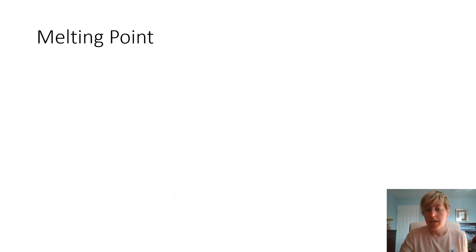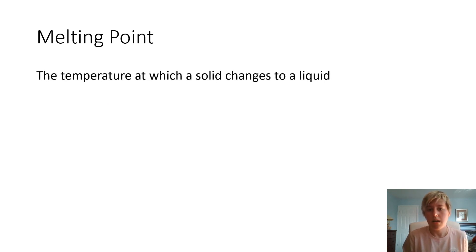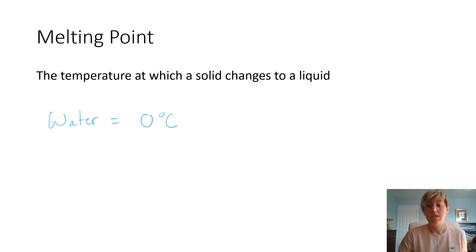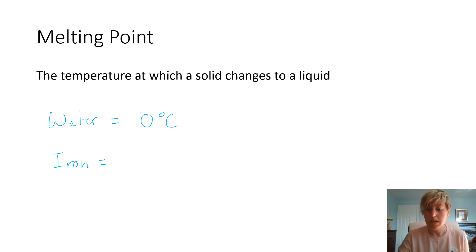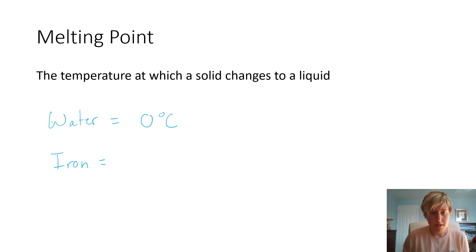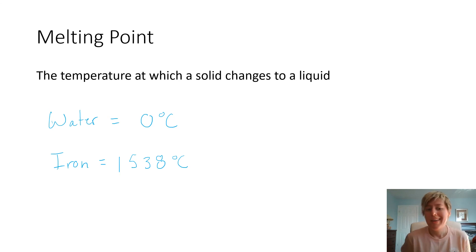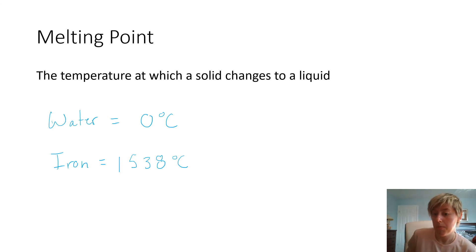Similar to boiling point is melting point — when a solid changes to a liquid. Water's melting point is 0 degrees Celsius. Different substances have different melting points. Iron's boiling point was nearly 3,000 degrees Celsius, and its melting point, while lower, is still very high at 1,538 degrees Celsius. I hope this covered the characteristic and non-characteristic properties of matter well. Thanks for watching and have a great day.